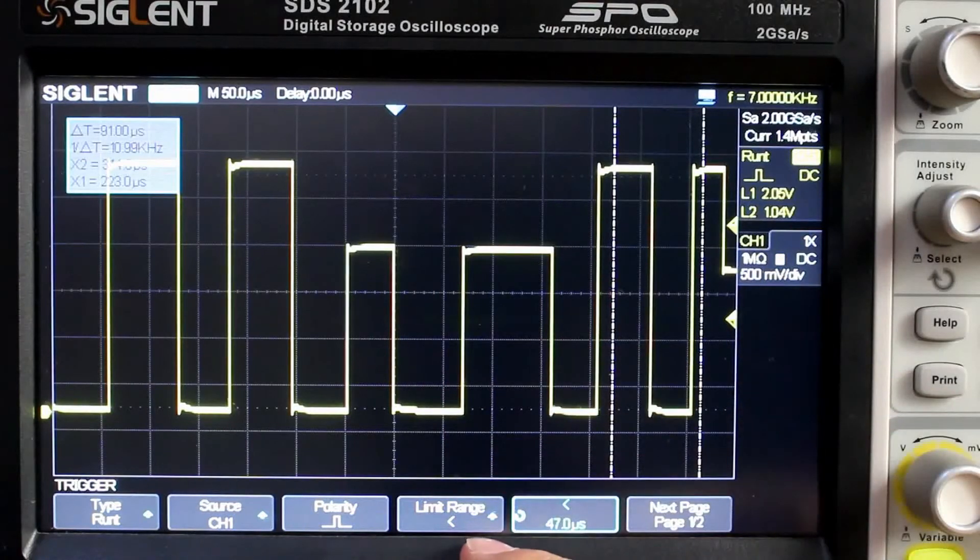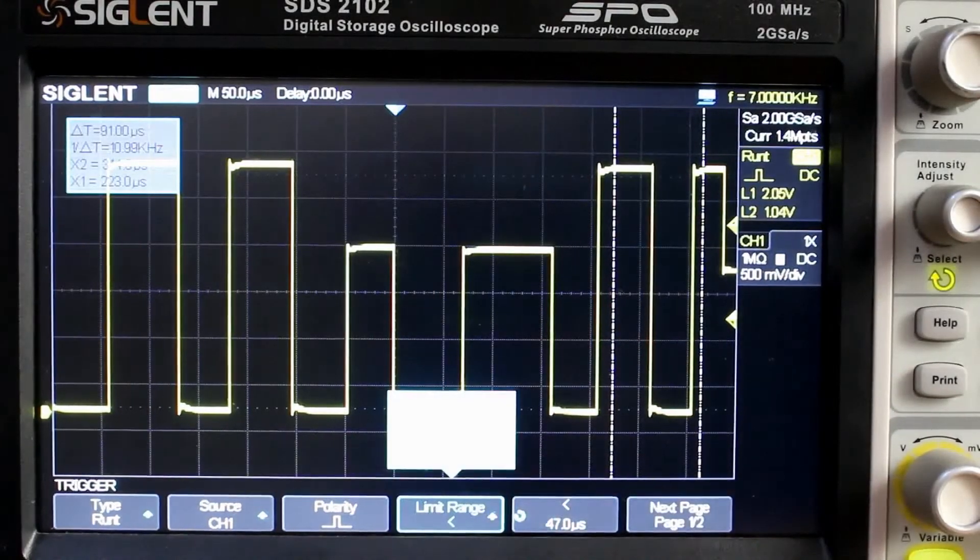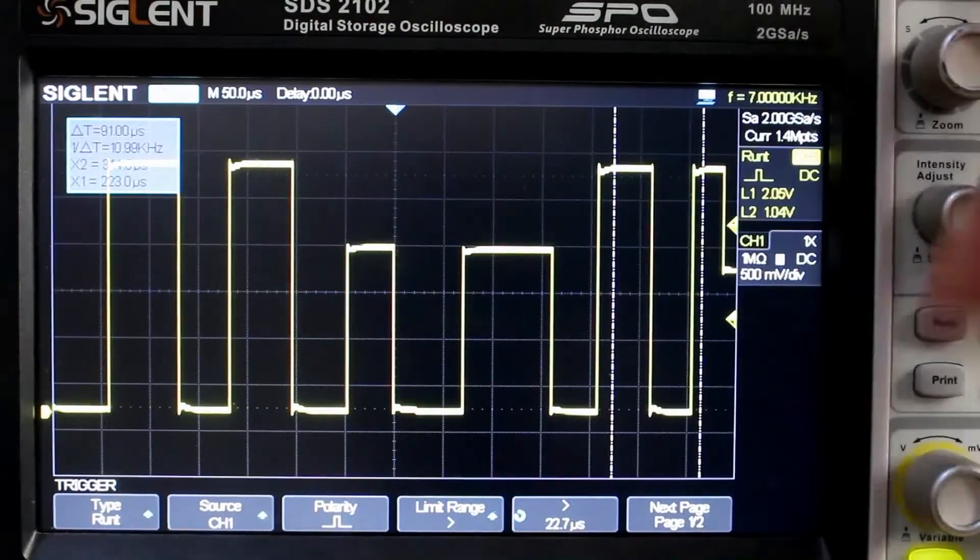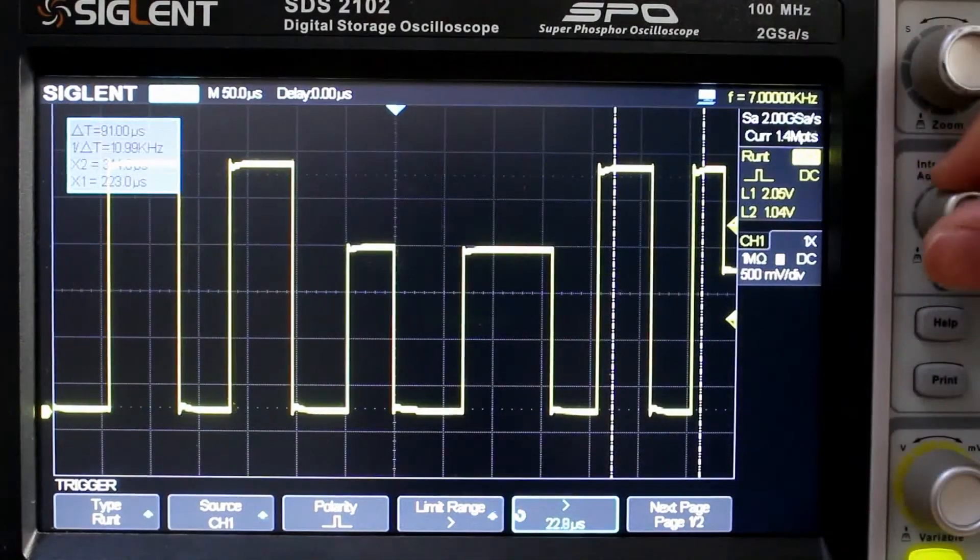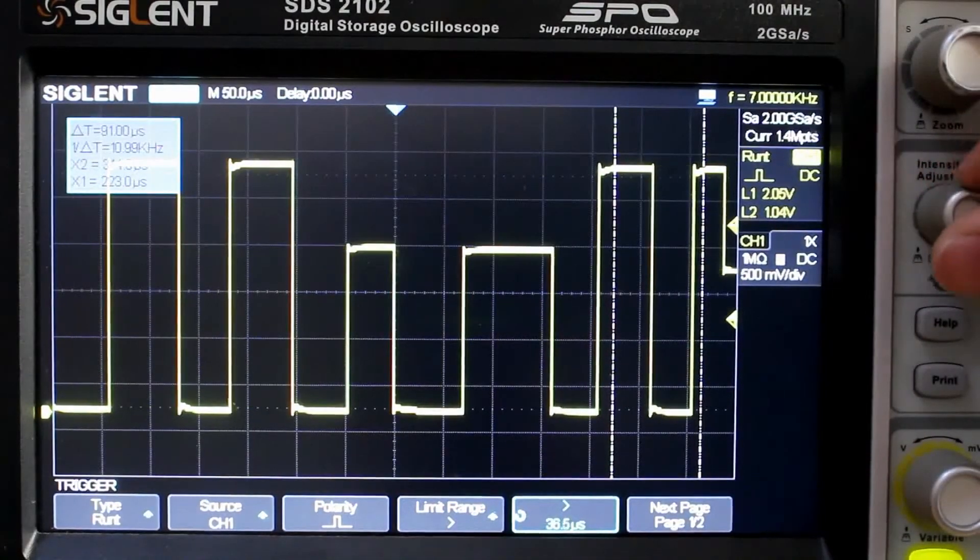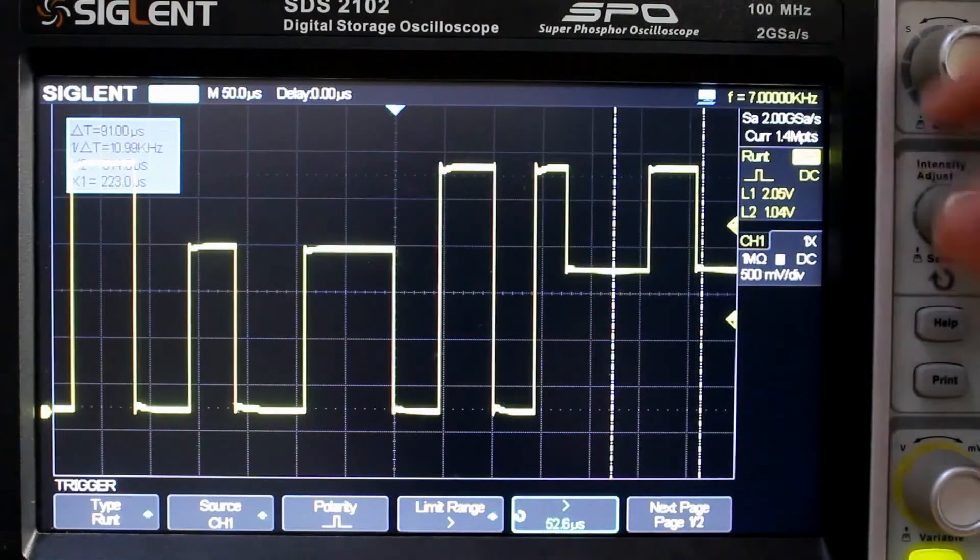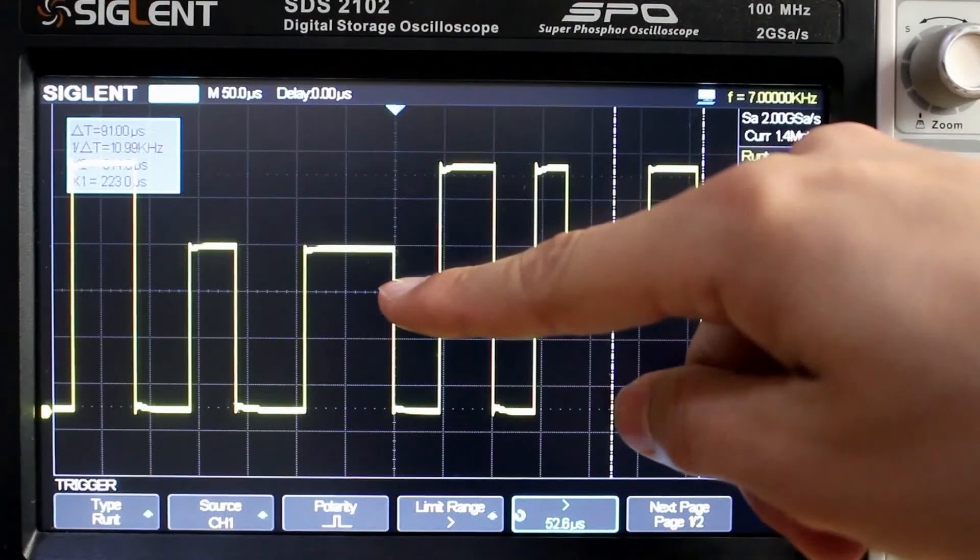Then if we change that limit range, and we can go to greater than, and we go up to anything up above 47, now we are triggered at the wider one.